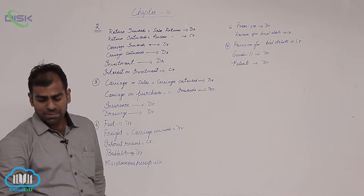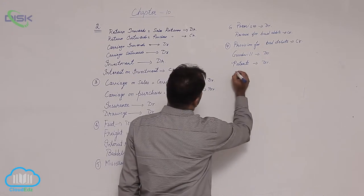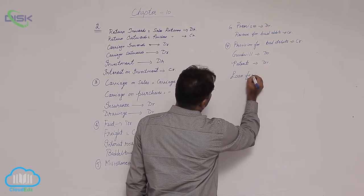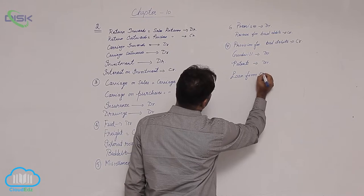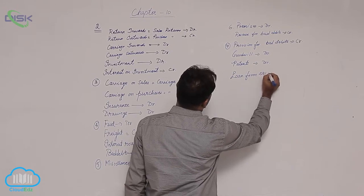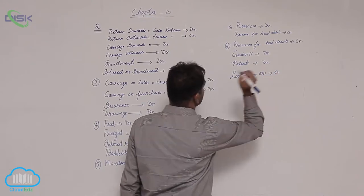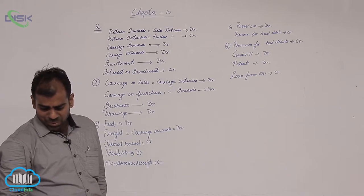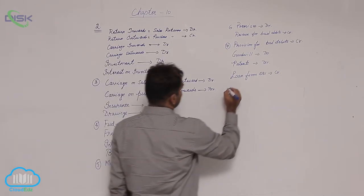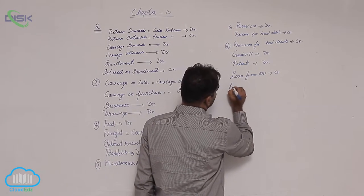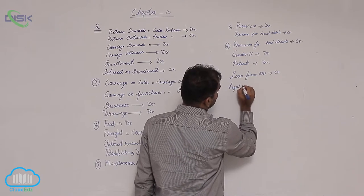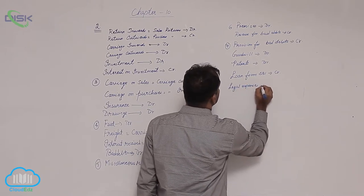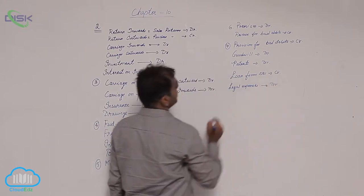Next you have loan from SBI. A loan means you have taken money from SBI, therefore it represents a liability, so it shows credit balance. Next, in the same problem you have legal expenses. Though the word clearly mentions expenses, they are nominal, so you take it as debit balance.